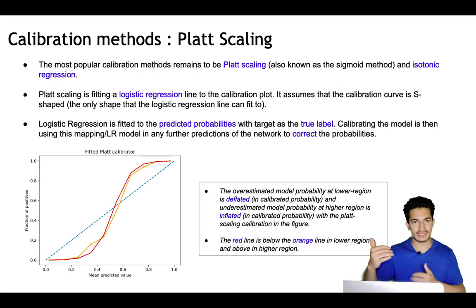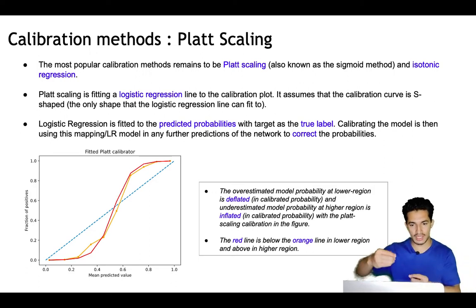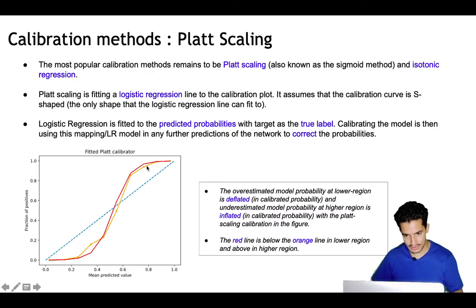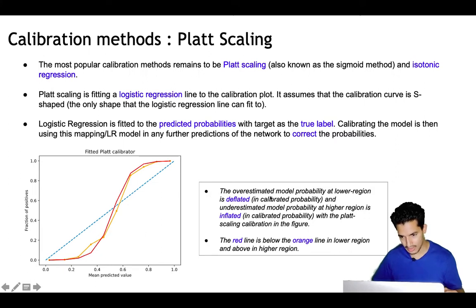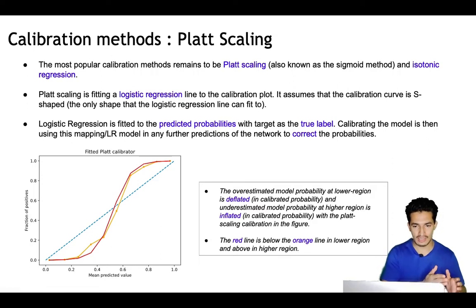Whenever we need to calibrate the model probabilities, we take the probabilities coming out of the sophisticated model and get calibrated probabilities from the logistic regression. The overestimated model probabilities in the lower region are deflated — the calibrated red line is below the orange line — and in the upper region where probabilities were underestimated, they are inflated. That's how Platt scaling works.